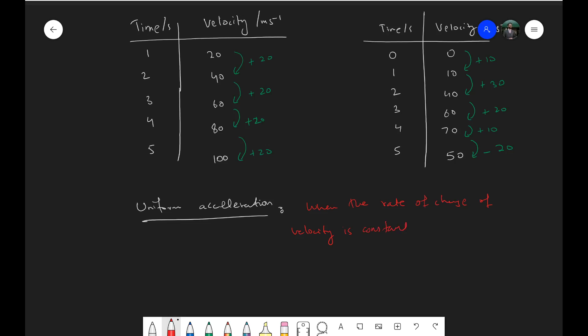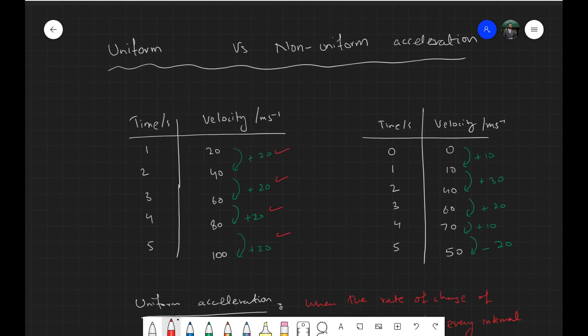And where is that happening? Well, you can see that the rate of change is constant. The velocity changed in one second always remains 20 all the time in this first table. So this one is actually the example of uniform acceleration, and it's the other one where it's not constant, so that is actually the example of non-uniform acceleration.